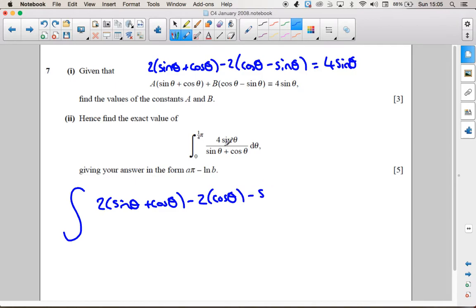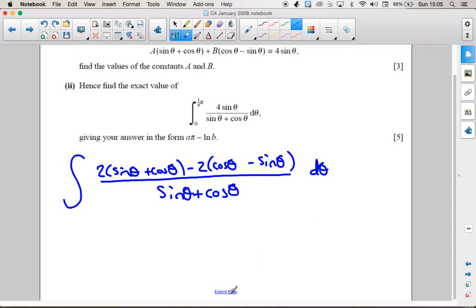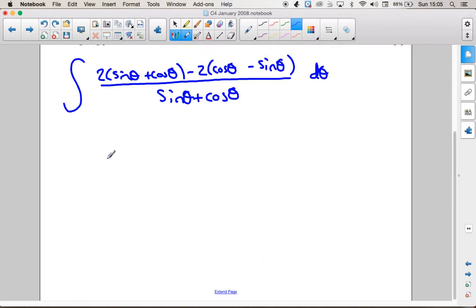what are we going to be able to do with that? Well, you can see on the bottom that there's a sin theta plus cos theta term, which we've got here. We can't just cancel that out though, but what we can do is split this back into two separate fractions. So we can say that this is the same as